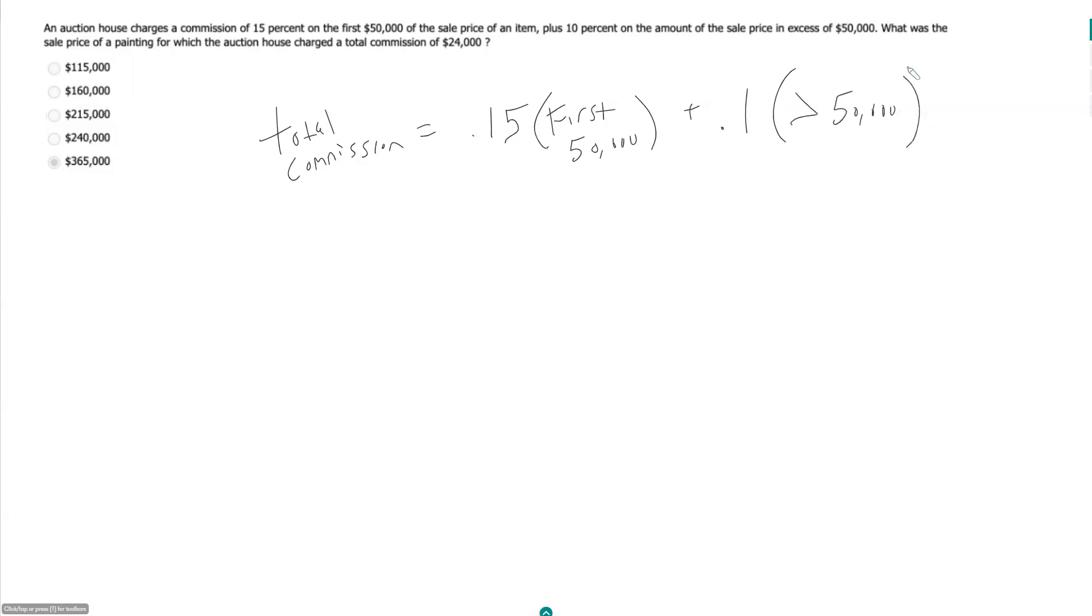So let's think, how would we find this? If a piece of art sold for $55,000, that would mean the first $50,000 I would take 15% of, and then I'd take 10% of the remaining price, which is $5,000. So in other words, this number here we can think of as the total price minus $50,000.